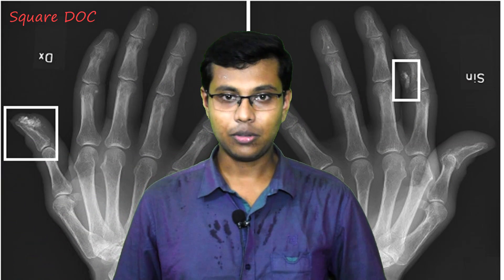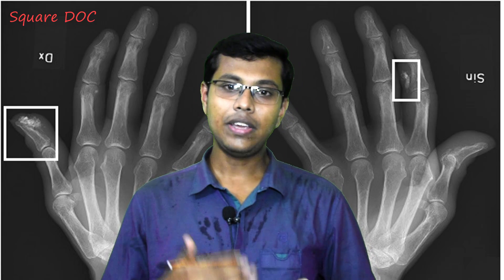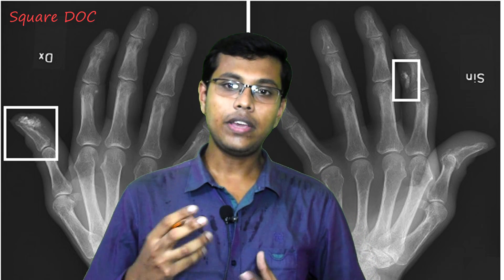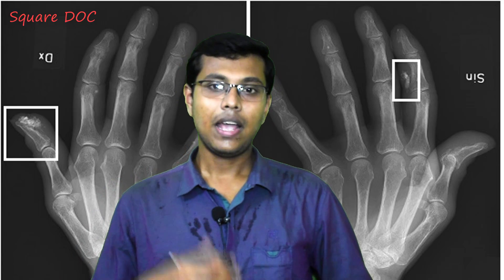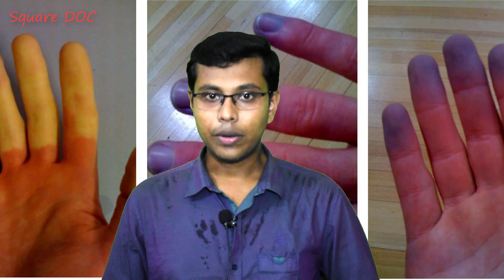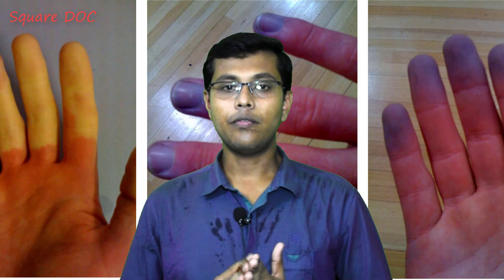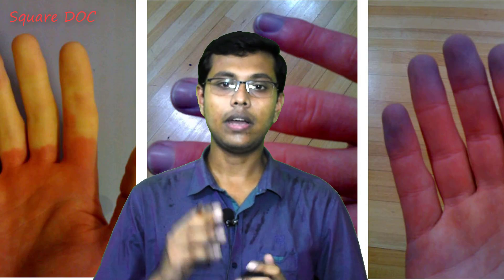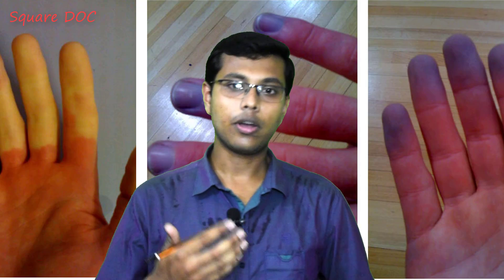C stands for Calcinosis. What is Calcinosis? Calcinosis means deposition of calcium in the skin of the fingers and feet. R stands for Raynaud's Phenomena. Raynaud's Phenomena is actually spasm of the small arteries and capillaries upon cold exposure.